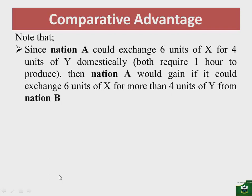From the point of view of nation A, the units exchanged must be more than four. So we are increasing from four, and any amount between the lower boundary and six X will make nation A gain.